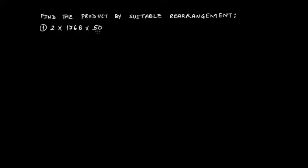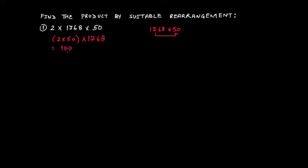If you group together 2 and 50, and then multiply by 1768, you would get 100. If you had grouped 1768 and 50 together, that would be a hectic multiplication. But since 2 × 50 = 100, and 100 × 1768 = 176,800, you can see how easily we found the answer. The trick is to always group numbers that give a multiple of 10, 100, or 1000.